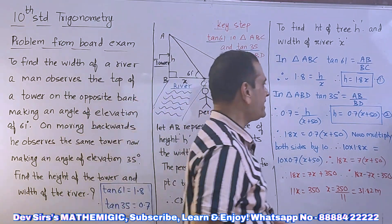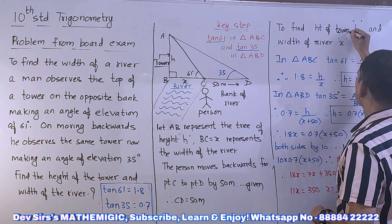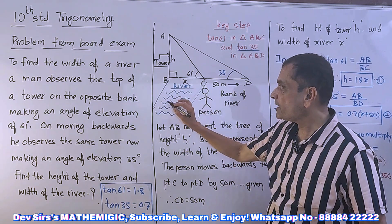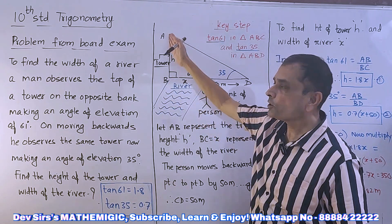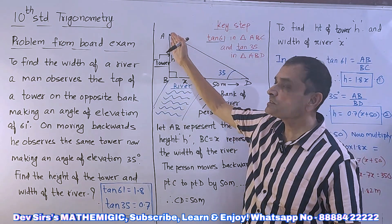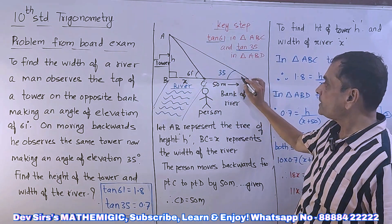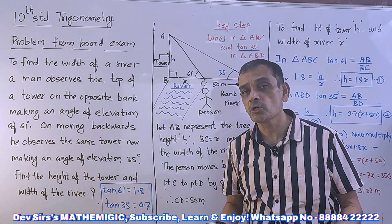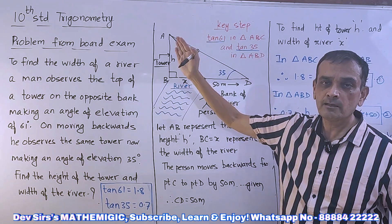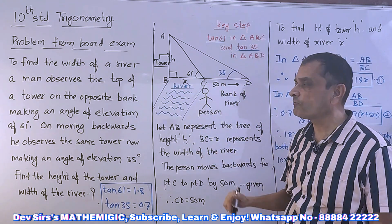AB represents the tower of height h. On the opposite bank, a person is standing. The angle of elevation from point C is 61 degrees. Then he comes back and again observes the same tower, but the angle of elevation is now reduced to 35 degrees — because he has moved backwards. If you go further back the angle reduces, and if you go forward it increases, but he cannot go forward as he would fall in the river.